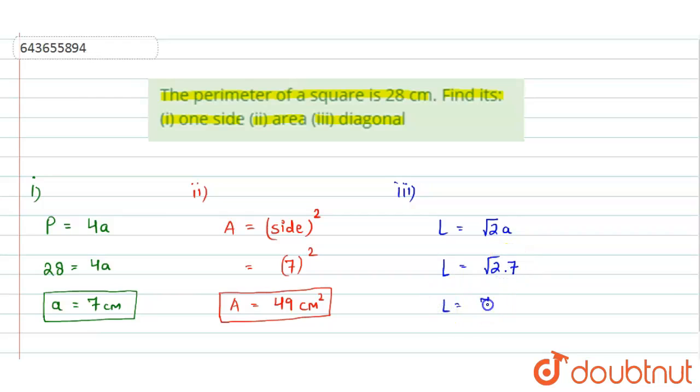This will be equal to 7 root 2 centimeters. So this is the length of the diagonal of the square. I hope you have understood this. Thank you.